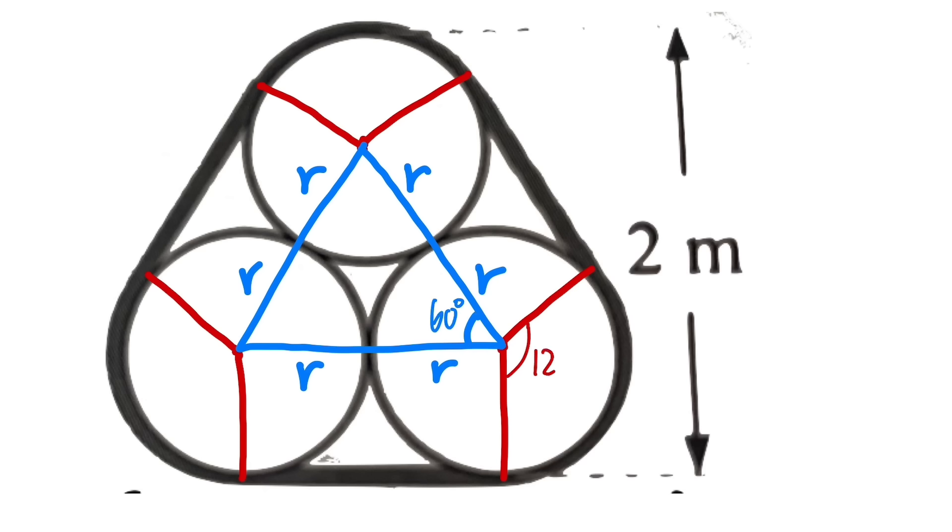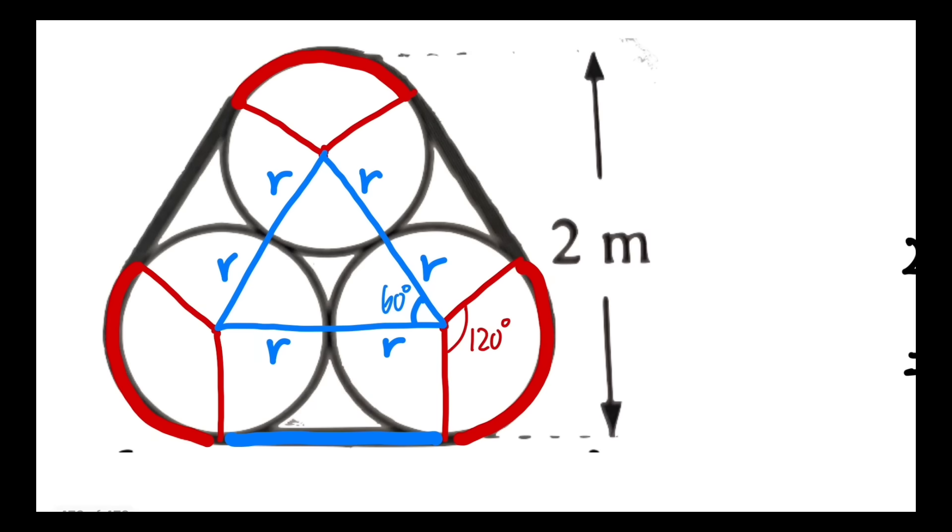That means this right here will be 60 degrees, this right here will be 120 degrees. And one quick way to see that is notice this right here is 90 degrees, and in fact this is also 90 degrees because this is actually a rectangle. And we have three of them, so this right here plus this has to be 360. That's why that red part right here is 120.